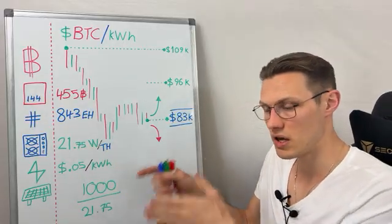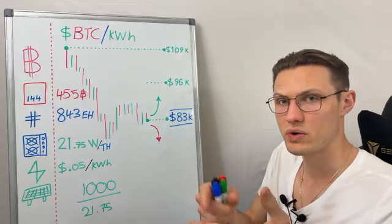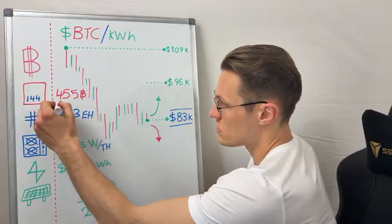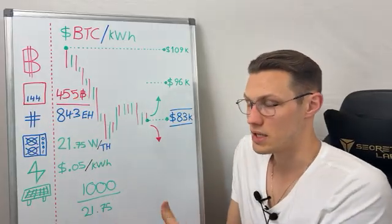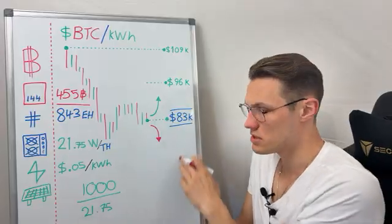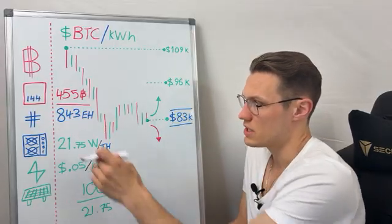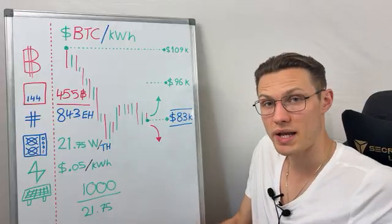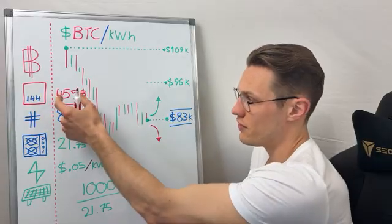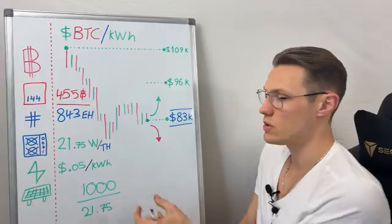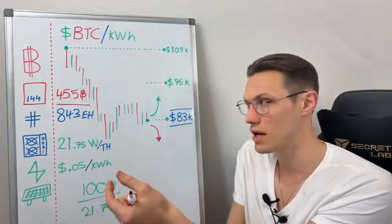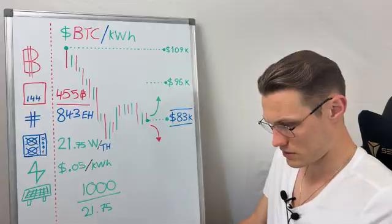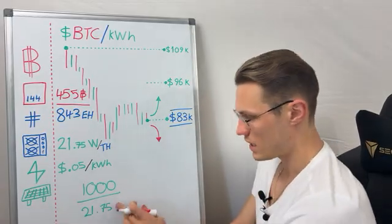We have a time variable, a compute variable, and a quantity of Bitcoin earned. To work through it: 455 divided by 843 million terahash, multiplied by the price. That direct conversion gives you the quantity of Bitcoin. If you do 455 divided by 843 million you get the amount of Bitcoin per terahash per day, because this covers 144 blocks. The result is approximately 0.045 — so you're earning 0.045 Bitcoin per terahash per day.